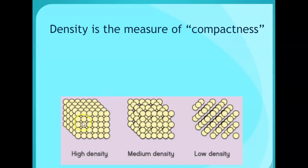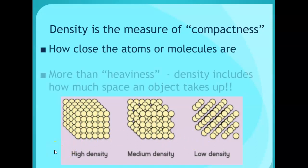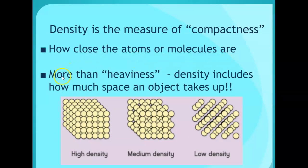Like when you have a solid, it's more dense, liquids a little less dense, and your lower density is going to be more like your gas. So how closely those atoms or molecules are, the more heaviness the density is, including how much space an object takes up.